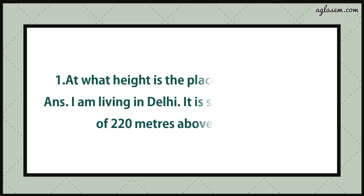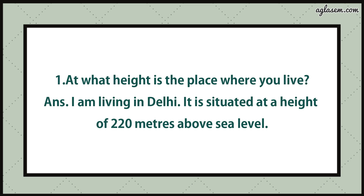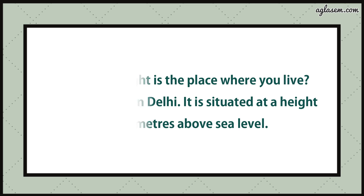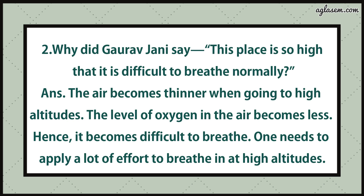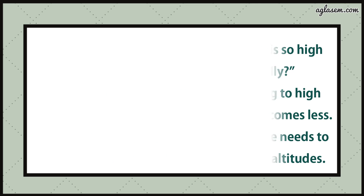Now turn to page number 124. Question number one says: at what height is the place where you live? Answer: I am living in Delhi; it is situated at a height of 220 meters above sea level. Question number two says: why did Gaurav Jani say this place is so high that it is difficult to breathe normally? Answer: The air becomes thinner when going to high altitudes; the level of oxygen in the air becomes less, hence it becomes difficult to breathe.